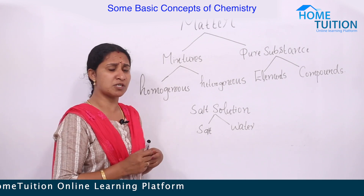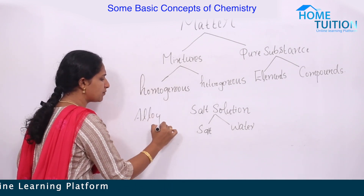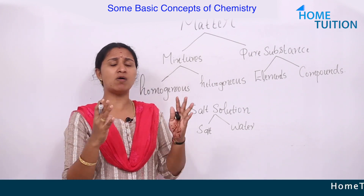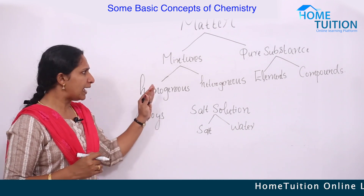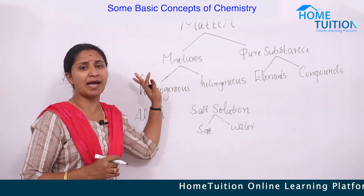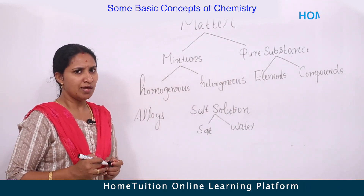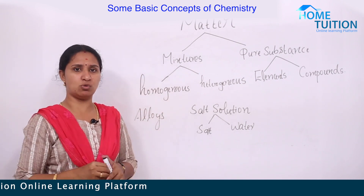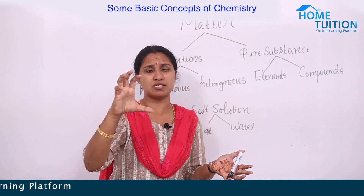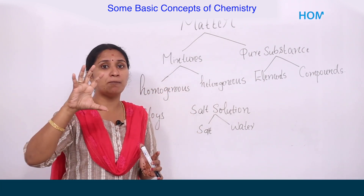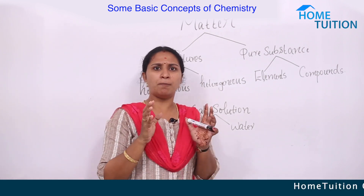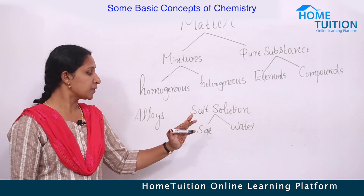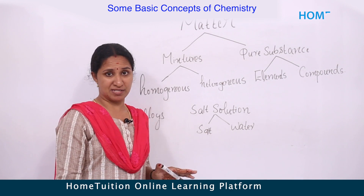You are all familiar with alloys — mixtures of two or more metals. Brass, bronze, and steel are all alloys, and alloys are also mixtures. Mixtures are classified into homogeneous and heterogeneous. In salt solution, we cannot distinguish the salt particles in the solution — the composition is uniform throughout. This is a homogeneous mixture.